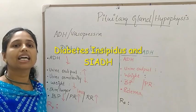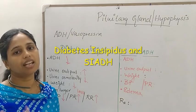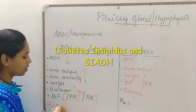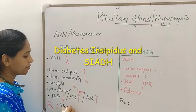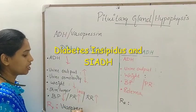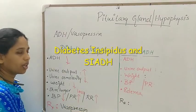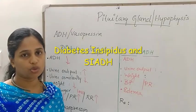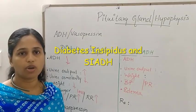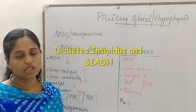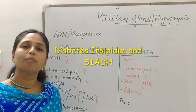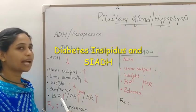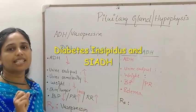The treatment involves replacing ADH. The replacement hormone used is vasopressin. Additionally, excessive fluid loss leads to electrolyte imbalance, which must also be managed. This is all about diabetes insipidus.